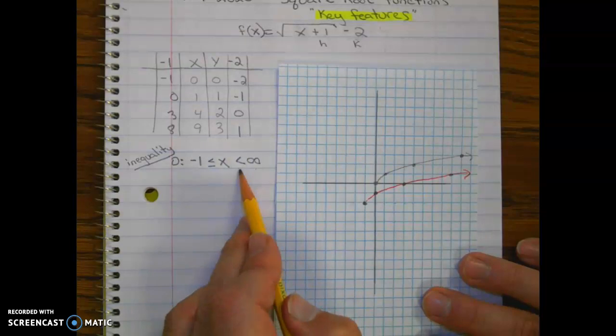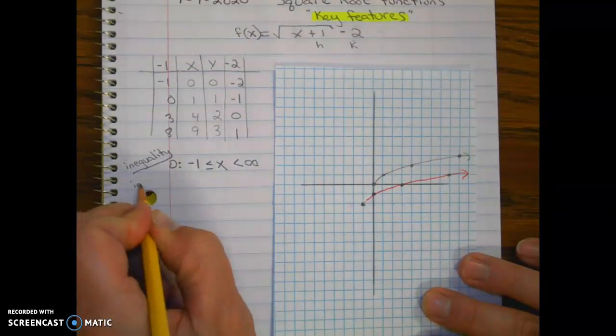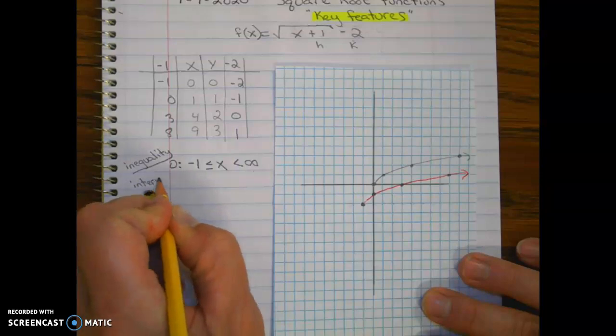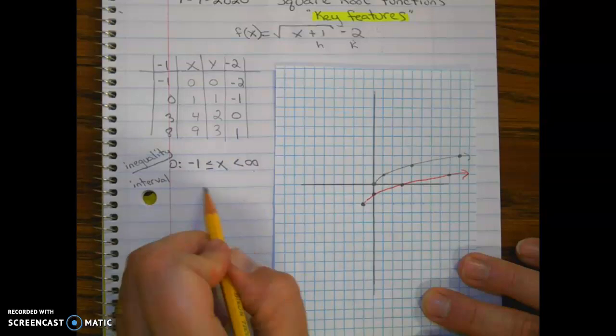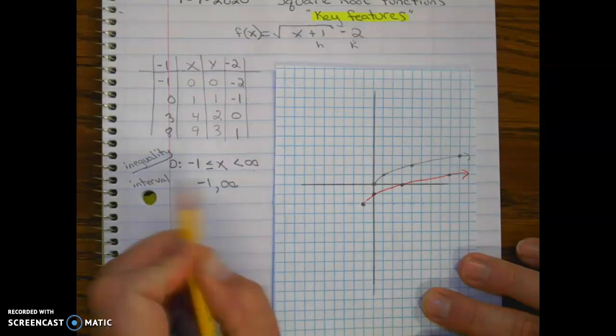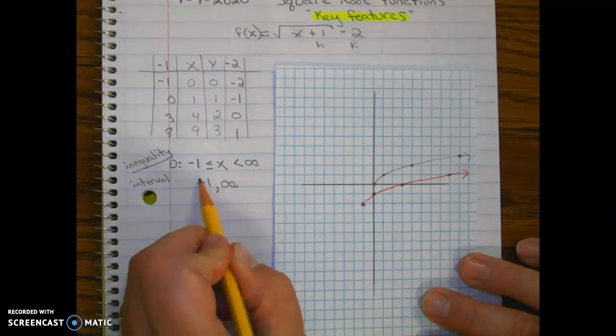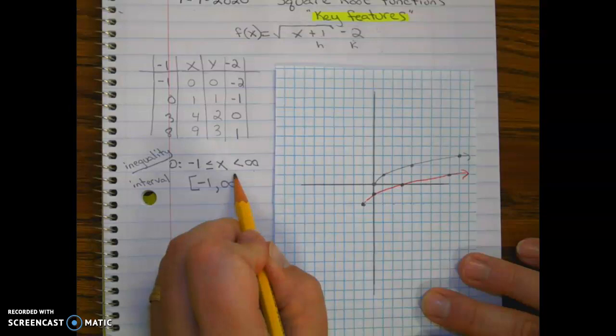Okay, interval notation. We put our left first, comma, then our right. Closed dot gets a bracket. Open dot or arrow gets a parenthesis.